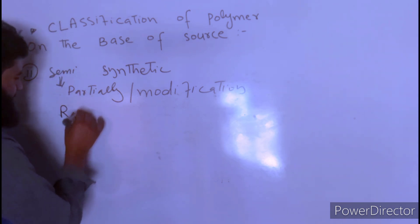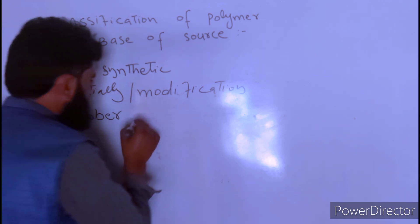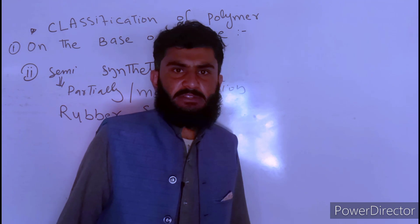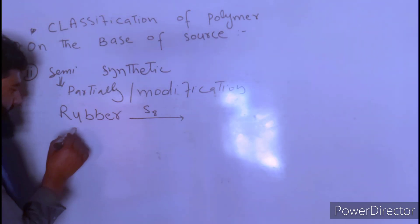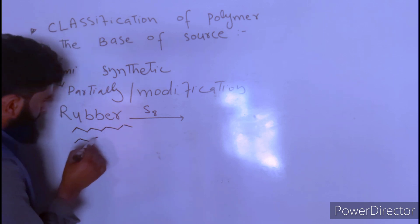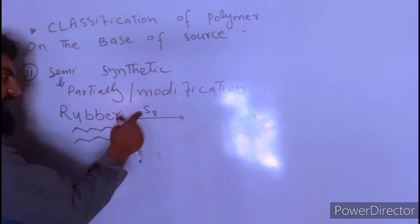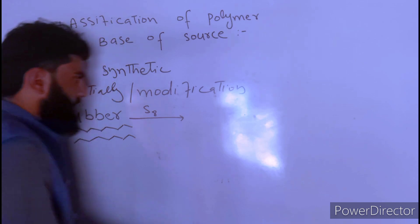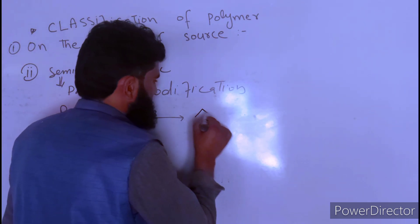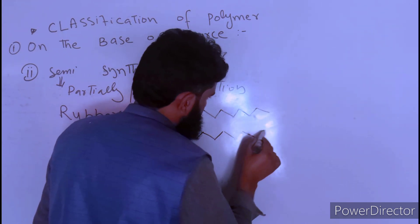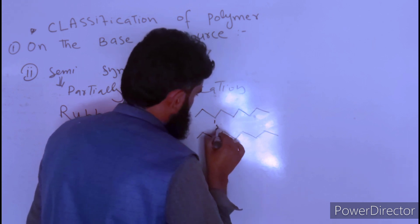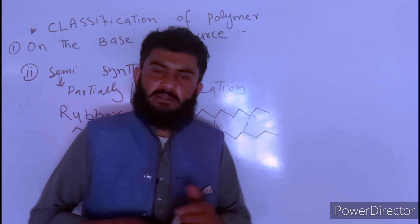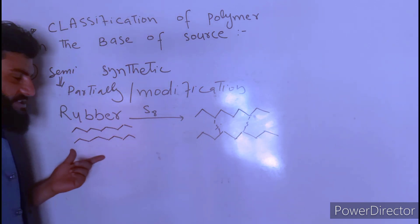For example, take rubber obtained directly from a plant. When we treat rubber with sulfur in the presence of heat, the sulfur forms cross-links between the rubber chains. This cross-linking is the modification.